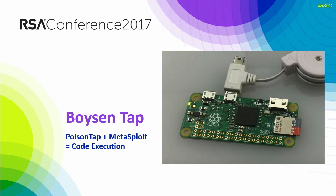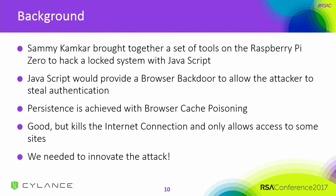We saw a recent use of a Raspberry Pi to do what's called a Poison Tap — which basically, even though the box is locked, you can plug in and totally take over the system, exploit it in any which way, shape, or form. We're going to show you how to do that in just a second.